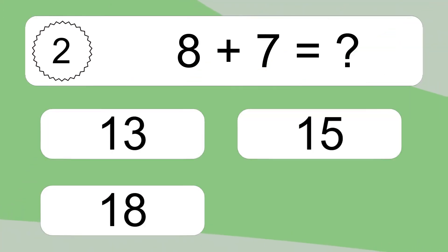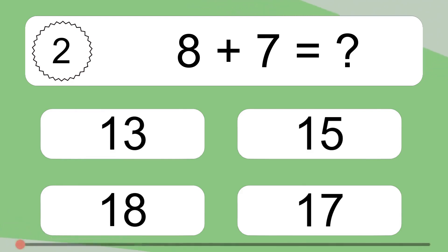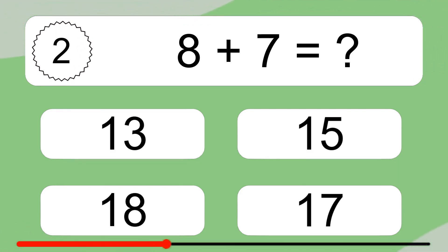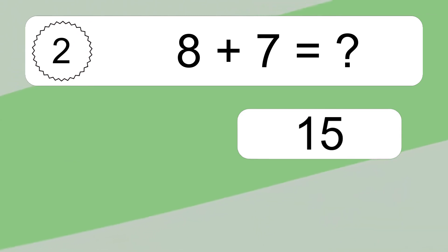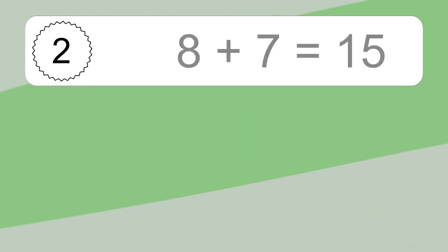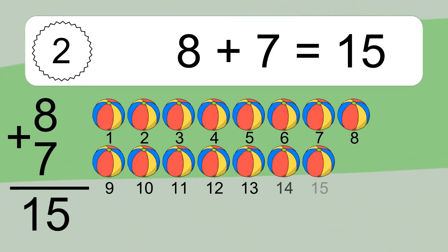8 plus 7 equals what? 8 plus 7 equals 15.